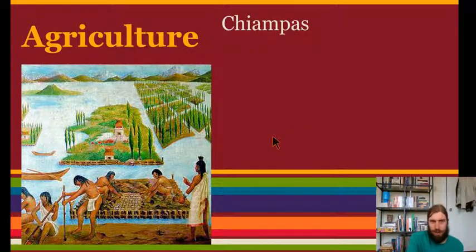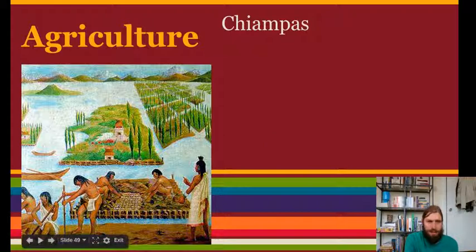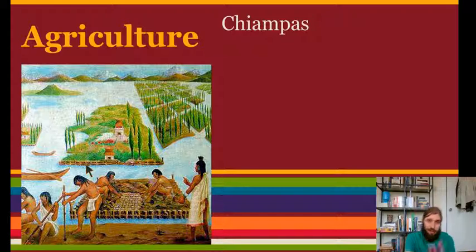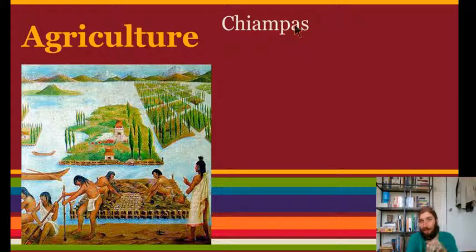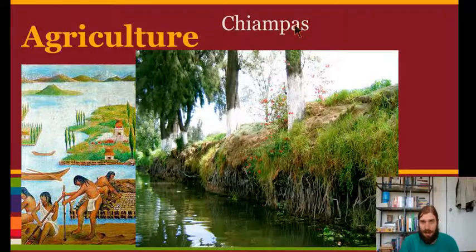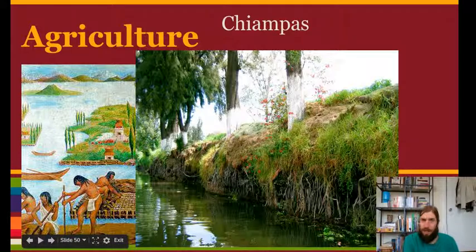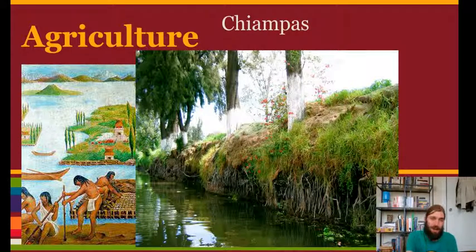Now, agriculture — that has to do with farming. How did they farm? They actually farmed by building islands in the lake they lived in, so when they didn't have enough farmland they built islands to farm on. These are called Chinampas. The modern city of Mexico City is built on top of what used to be Tenochtitlan, and there's a neighborhood in south Mexico City where you can still see the Chinampas that the Aztecs built — they're called the floating gardens of Xochimilco.